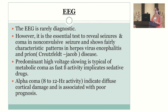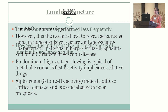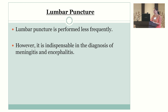EEG in an unconscious patient is rarely diagnostic by itself. Ictal EEG gives little information; only post-ictal EEG confirms a seizure occurred. Predominant high-voltage slowing is typical of metabolic coma; fast beta activity and alpha coma (8–12 Hz) indicate diffuse cortical damage, which is associated with a poor prognosis. Lumbar puncture is the next investigation when meningitis or encephalitis is suspected.